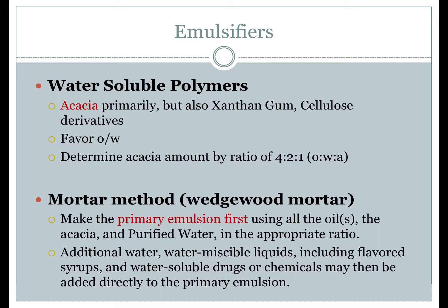Fixed oils form acacia emulsions more readily than mineral oils, so a vegetable oil is preferred when using acacia. Begin by calculating ingredient amounts based on the appropriate ratio. Because acacia forms oil-in-water emulsions, oil is the internal phase, and all of the oil in the formulation must be emulsified when making the primary emulsion. After the primary emulsion is formed, it may be diluted with extra water or water-miscible liquids such as flavoring vehicles. Water-soluble drugs may also be added after the primary emulsion has formed.